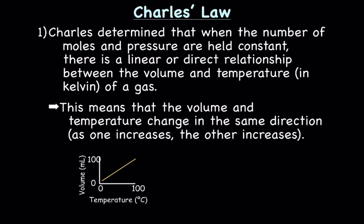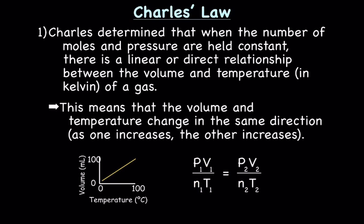Here is a graphical representation: if we graph volume by temperature, as volume increases so does temperature — a graph with an increasing slope is known as a linear or direct relationship. Charles's Law uses just V and T, holding P and N constant, giving us V1/T1 = V2/T2.